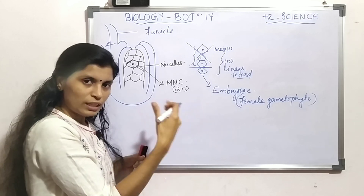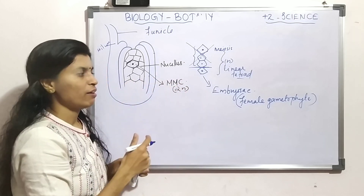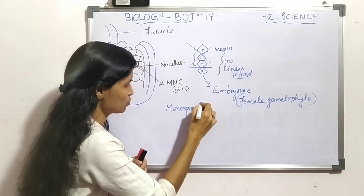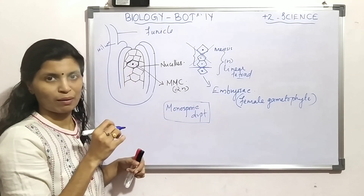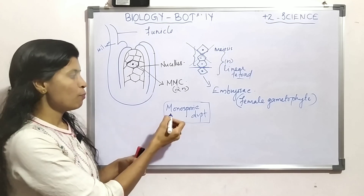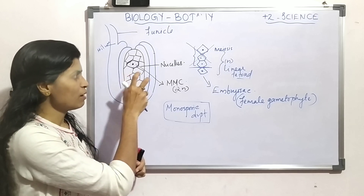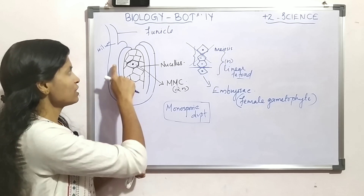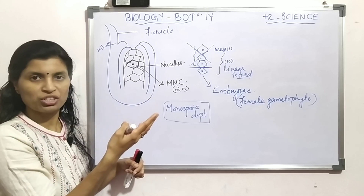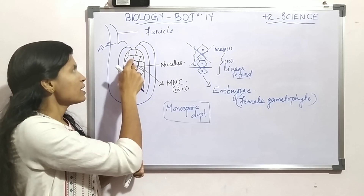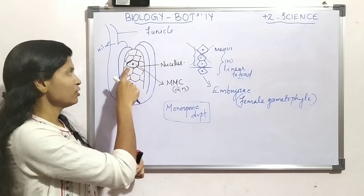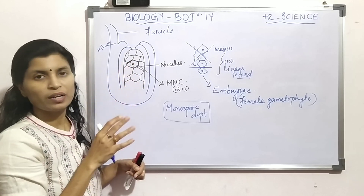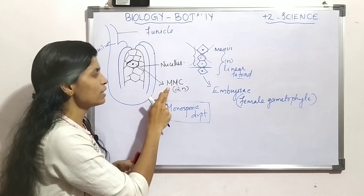This type of development is called monosporic development — a very important term. Why is this development called monosporic? Mono means one. So this development starts from a single cell. One cell towards the micropilar end becomes differentiated, with denser cytoplasm and a prominent nucleus, and is now called the megaspore mother cell.